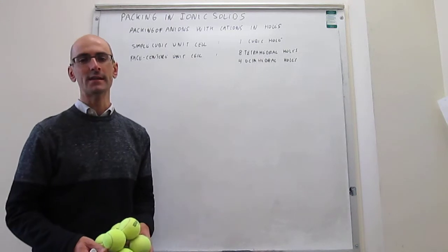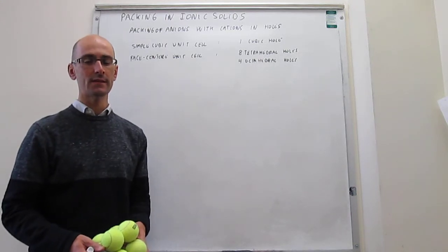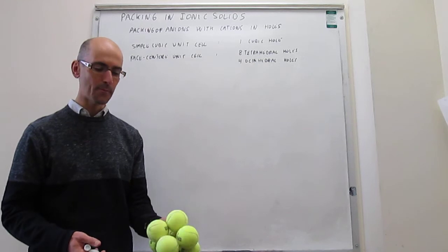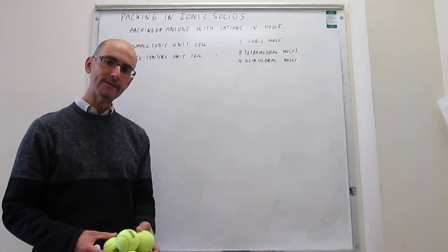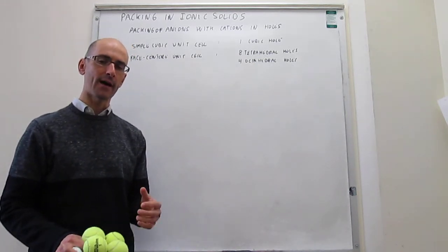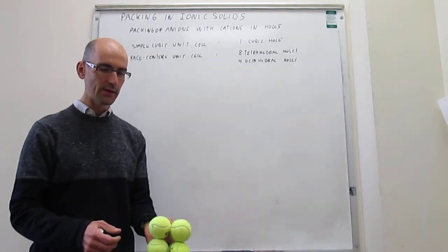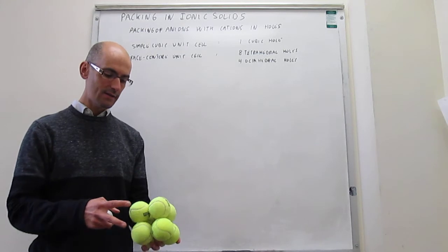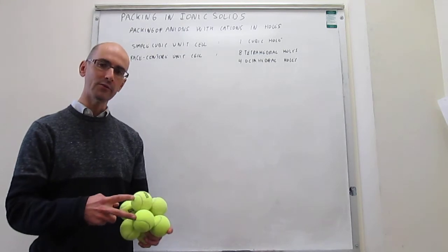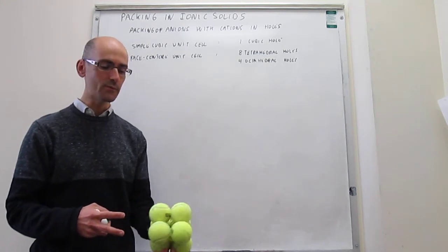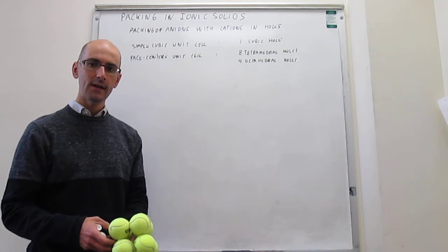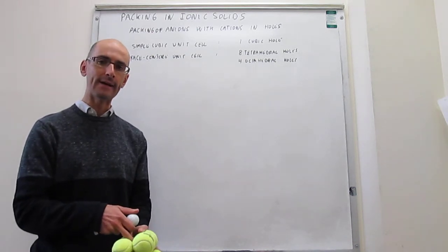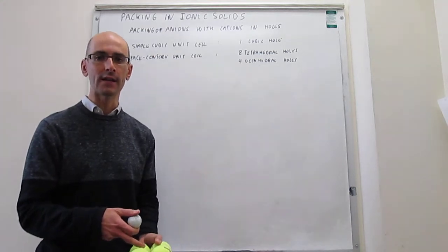In this video, we calculate the limiting radius for a cation in a simple cubic hole. We're talking about ionic solids and how they pack. Generally, because anions tend to be larger than cations, the anions are going to pack much as metal atoms do in lattices, and then the cations, which tend to be smaller, tend to pack in the holes left behind by the packing of the anions.